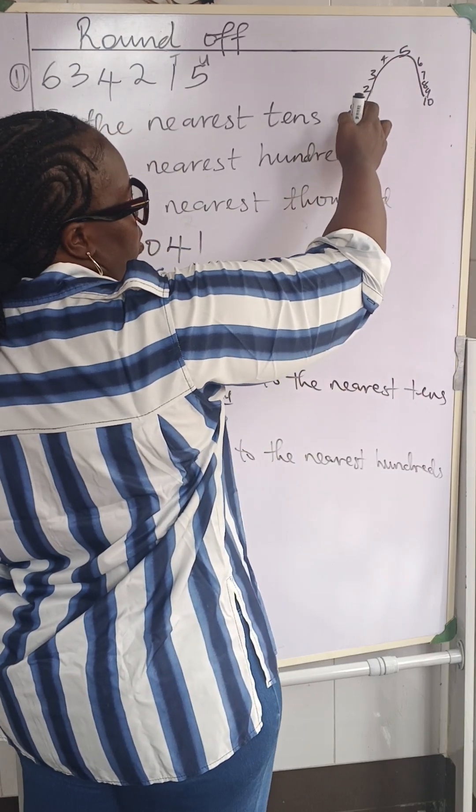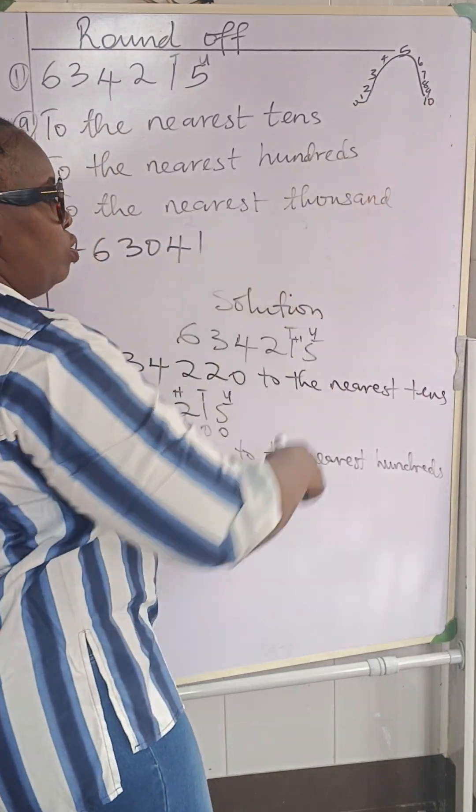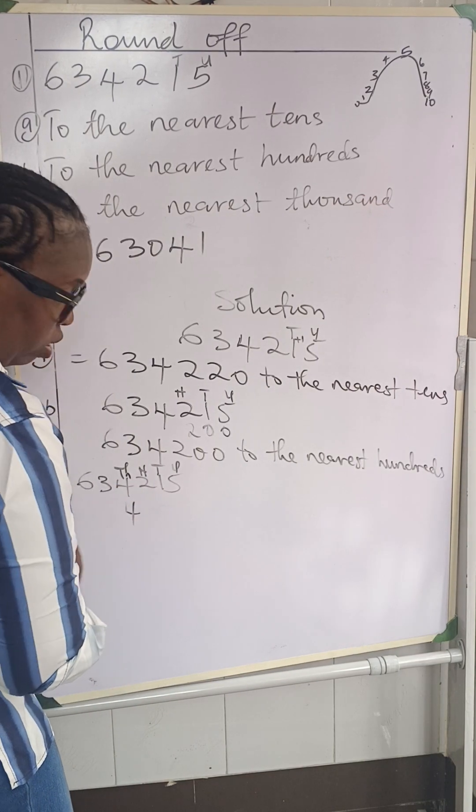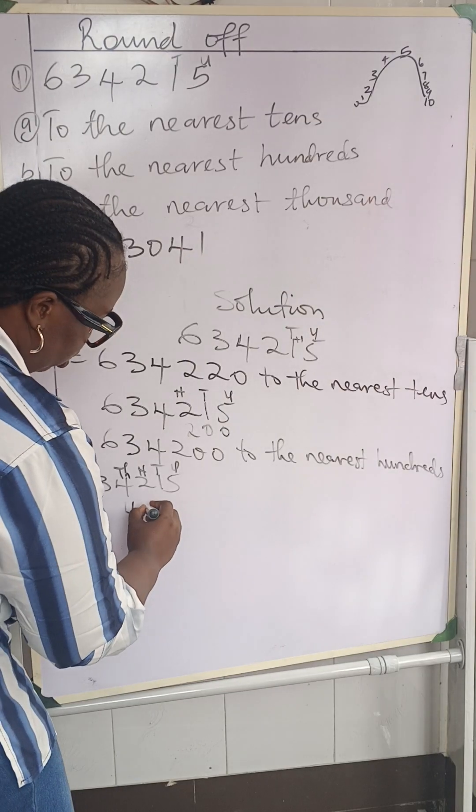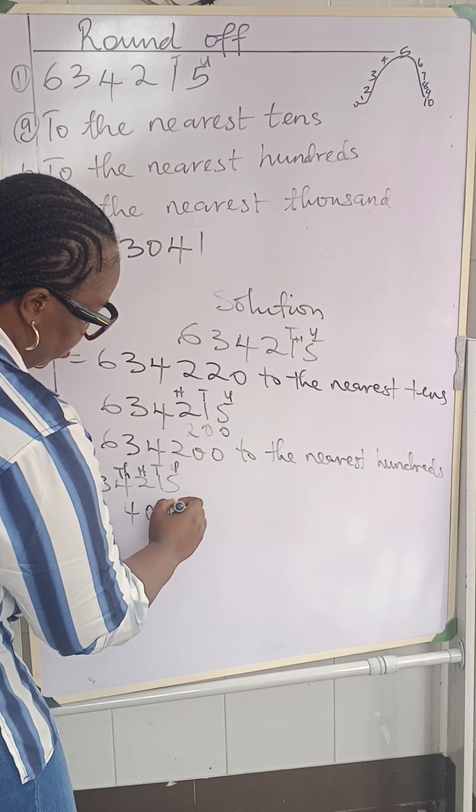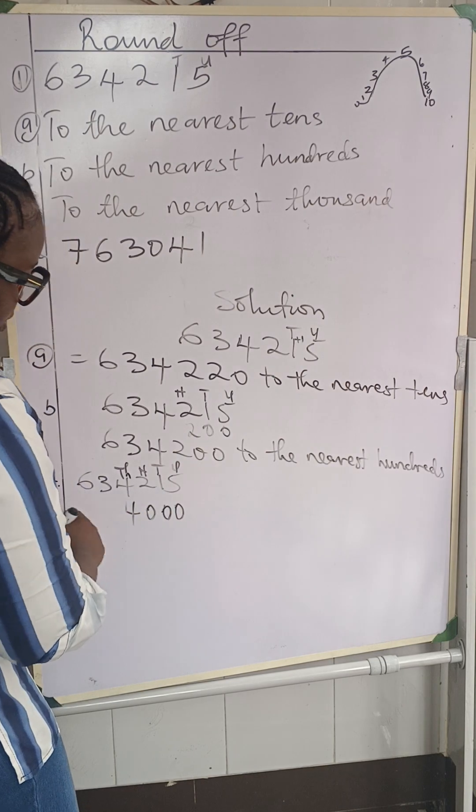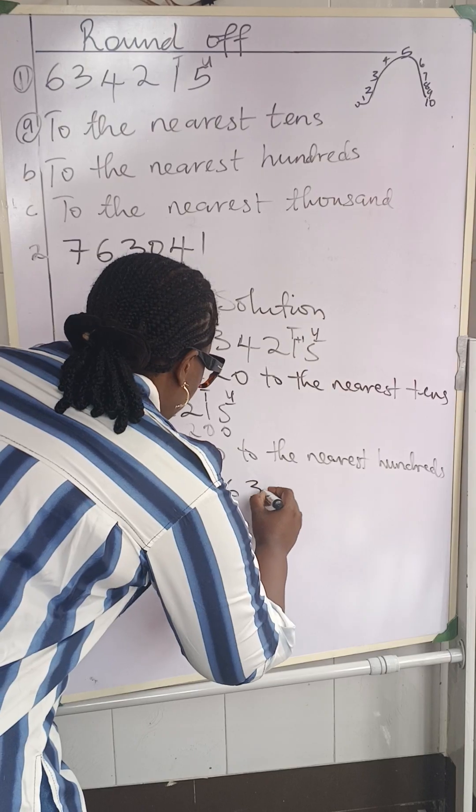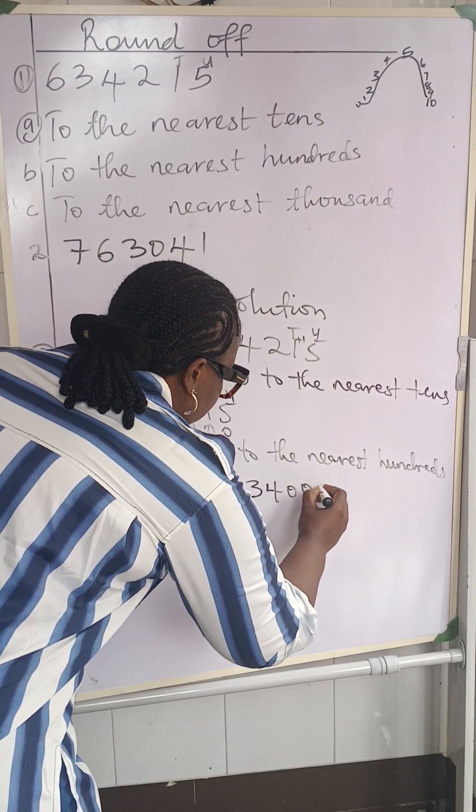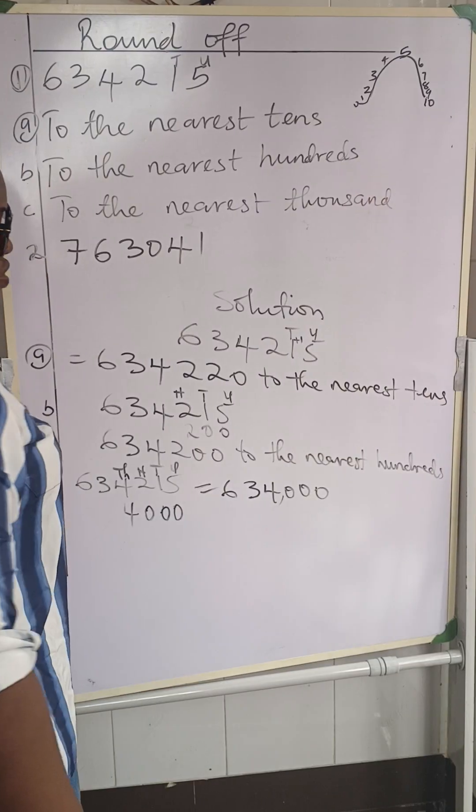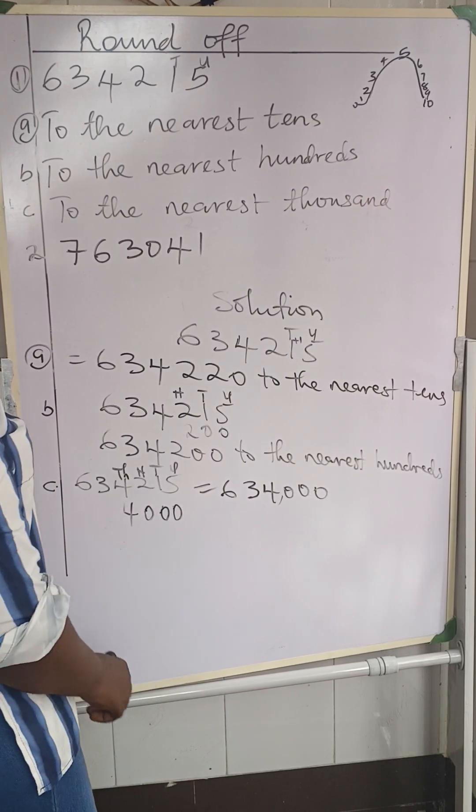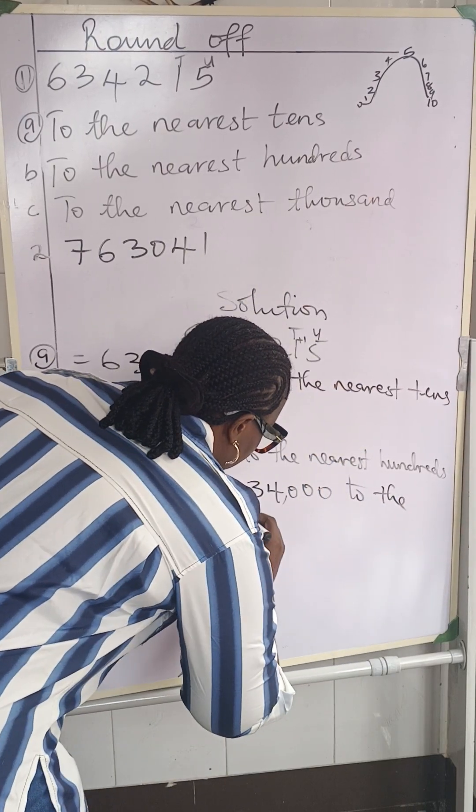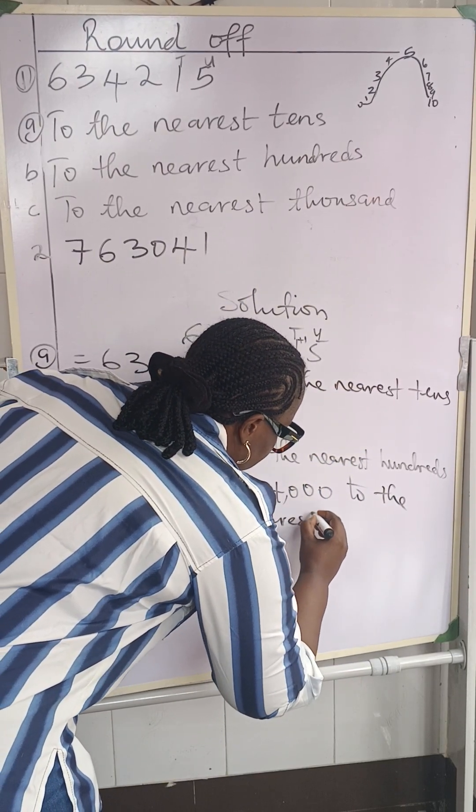If it was up to 5, it goes this way and add 1. But since it's not up to, we are going to have 4 is still 4 because it did not affect it. The 2 was not up to, we replace it with 0, we replace the 1 with 0, and we replace 5 with 0. So what is going to be our final answer? We're going to have 634,000. To the nearest thousand.